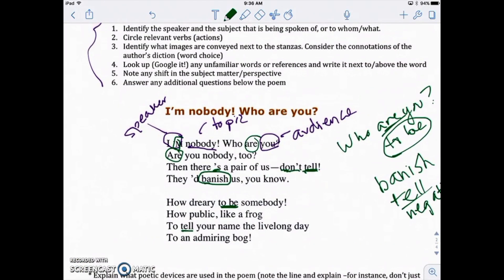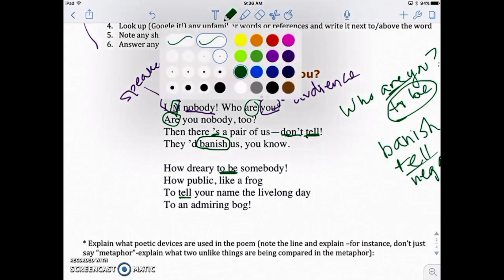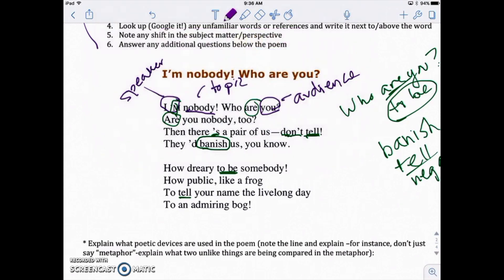Okay. The next step, if we look up again, right over here, we've got identify what images are conveyed next to the stanzas. Consider the connotations of the author's diction or word choice. Okay. So now we're going to be looking for images. So let's scroll back down. I've got, I'm nobody. Who are you? Are you nobody too? Then there's a pair of us. Don't tell. They banish us. You know, we could maybe identify that this idea of nobody kind of feels like nothing. So there's this image of nothing here. So we can, if we want to, write that down as an image. I'm going to switch colors actually. So we've got image over here of nothing, right? Nothingness.